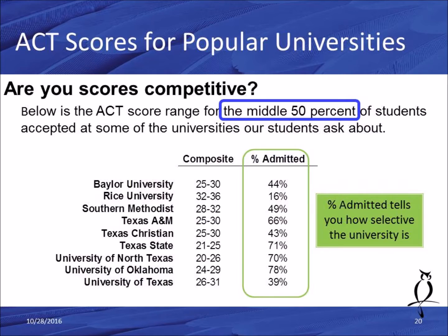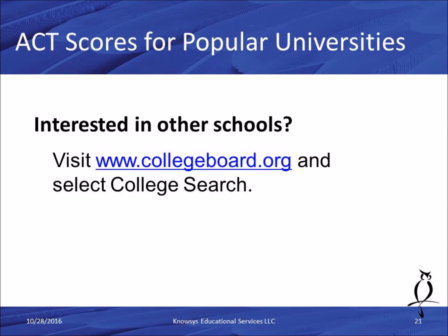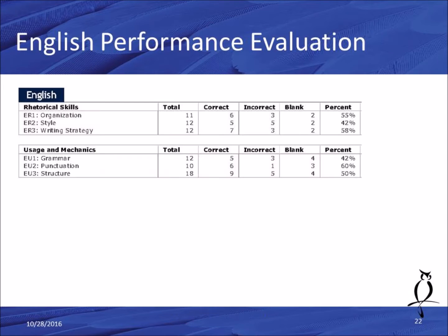If the school you're interested in wasn't on that list, no problem. As mentioned, collegeboard.org is where you go to get this information. When you get there, select College Search, type in the university, then go down to Application — and under that you'll be able to see the scores for SAT and ACT.